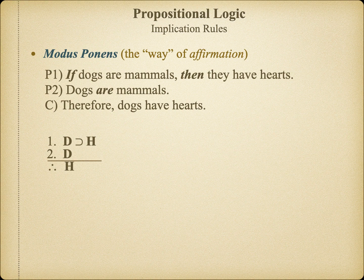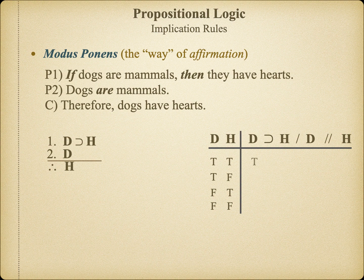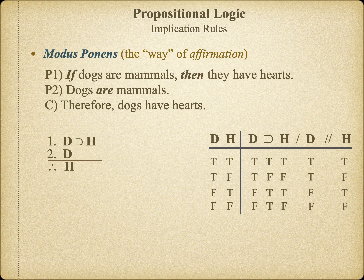We've already worked the truth table for modus ponens, so we know it's valid, but just to reinforce our memory, let's look at it again. Once the truth table is complete, we can see that there are no worlds in which all of the premises are true but the conclusion is false. Thus, we know any argument of the form — if P then Q, it is the case that P, therefore it must be the case that Q — will be valid.